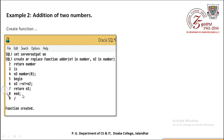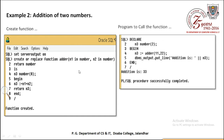Function create हो जाएगा। इसको call करने के लिए program लिखा: DECLARE n3 NUMBER(2); BEGIN n3 := adder(11, 22); - यह parameterized function था और इसमें दो values pass की 11 and 22। Print करवाया तो output आई addition is 33।